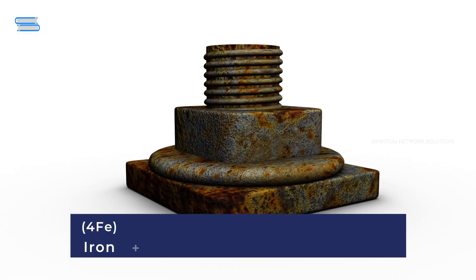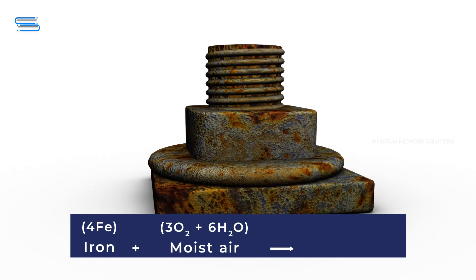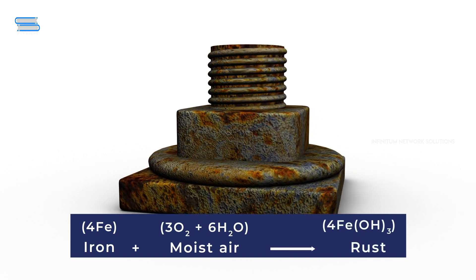Rusting of iron occurs when iron is exposed to moist air for a long time, forming a brown, flaky substance.